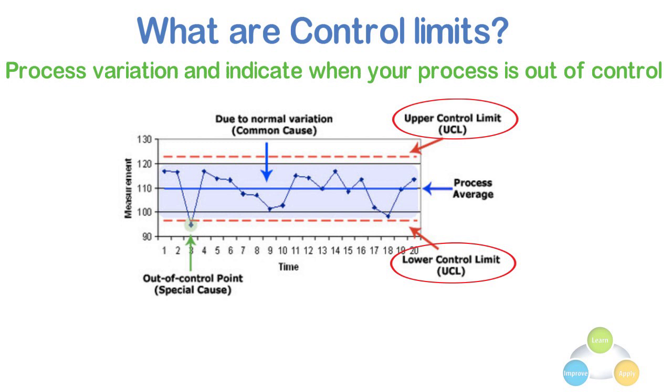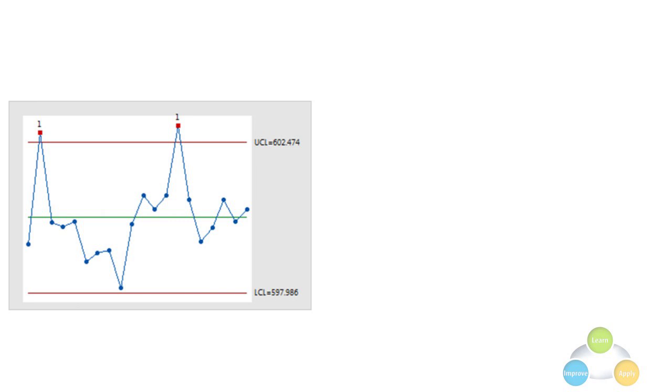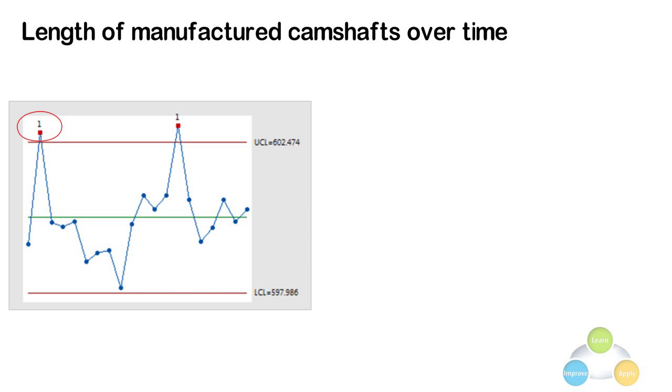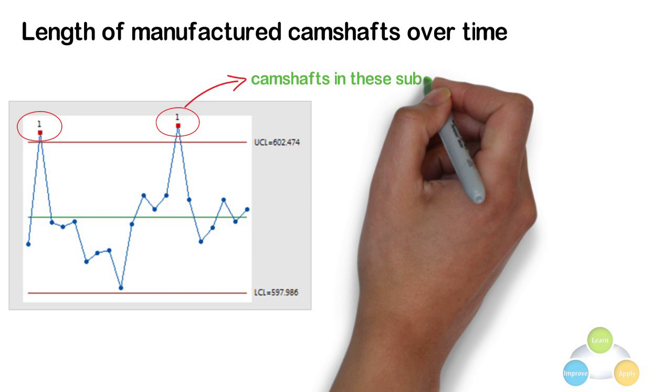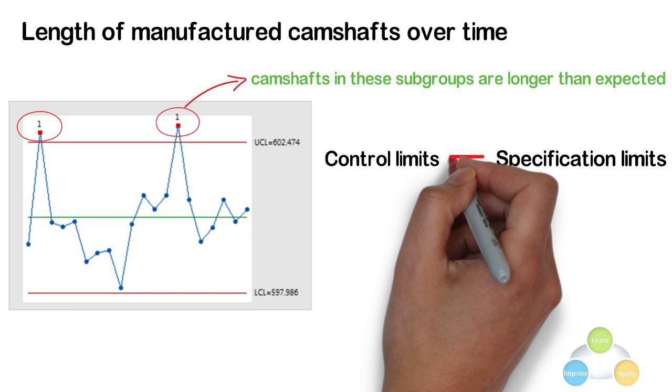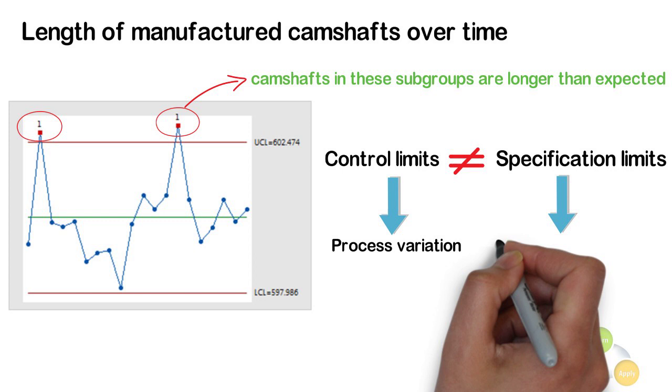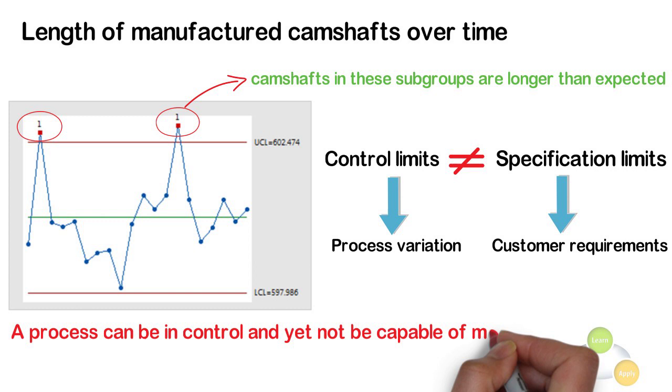For example, this X bar chart displays the length of manufacturing camshafts over time. Two points are above the upper control limit. These out of control points indicate that the camshafts in these subgroups are longer than expected. Do not confuse control limits with the specification limits. Control limits are based on the process variation and specification limits are based on the customer requirements. A process can be in control and yet not be capable of meeting the specifications.